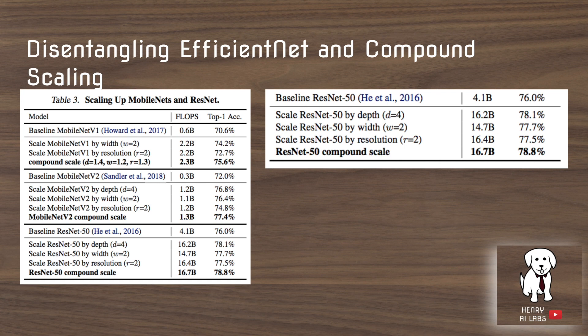They want to disentangle EfficientNet and the compound scaling method, because as a reader you might think the technique is specifically tuned to their EfficientNet architecture. What they show — highlighted on the right — is the effect of scaling up ResNet-50 using this technique. Compound scaling outperforms solely increasing depth, width, or resolution, and generally scaling it up achieves 2.8% better accuracy than the baseline network.